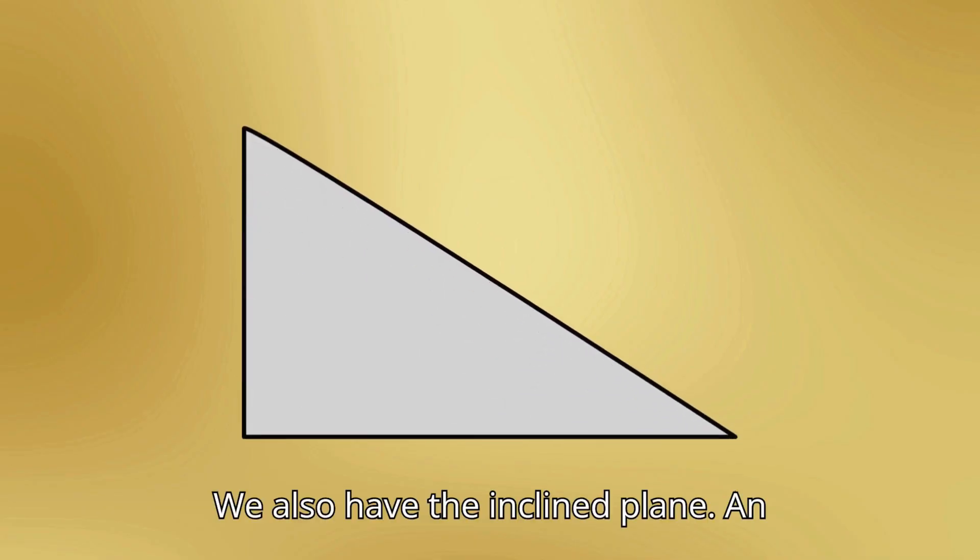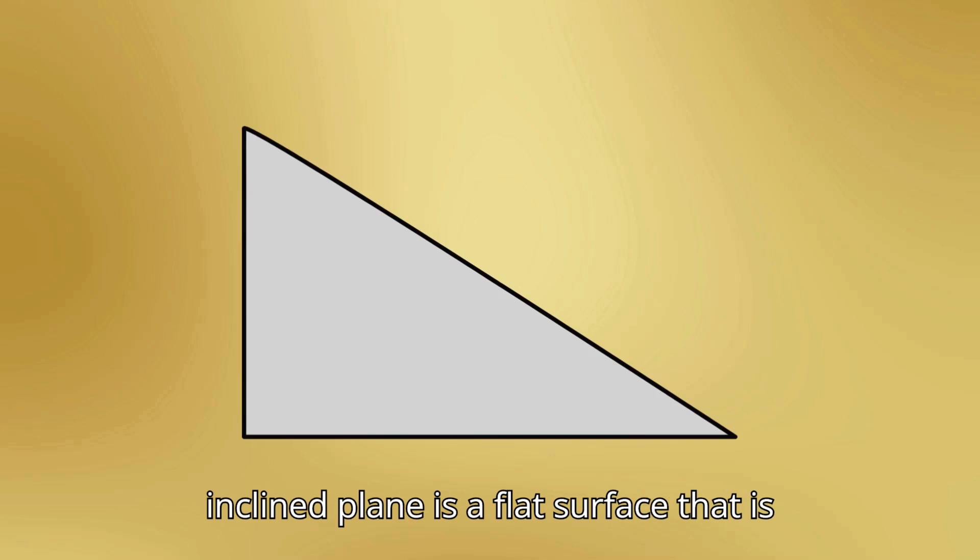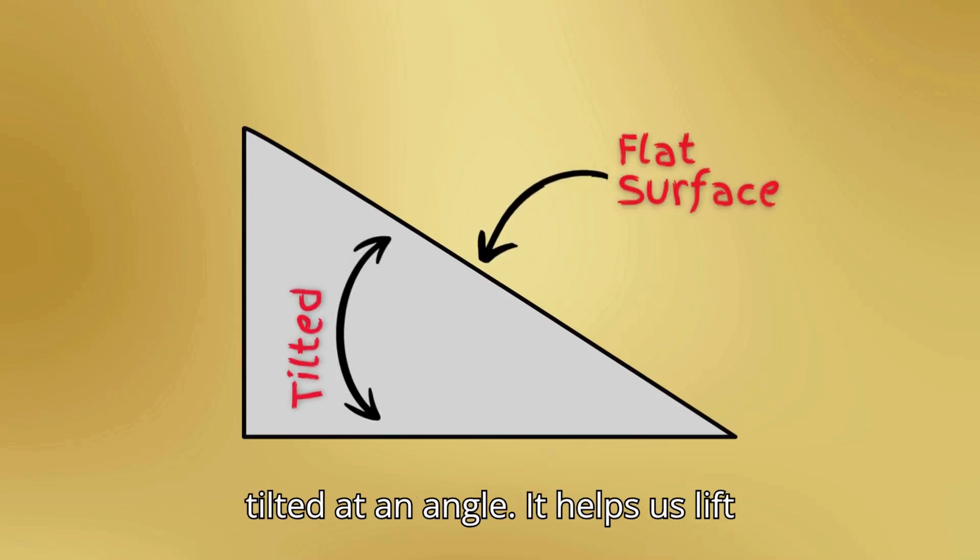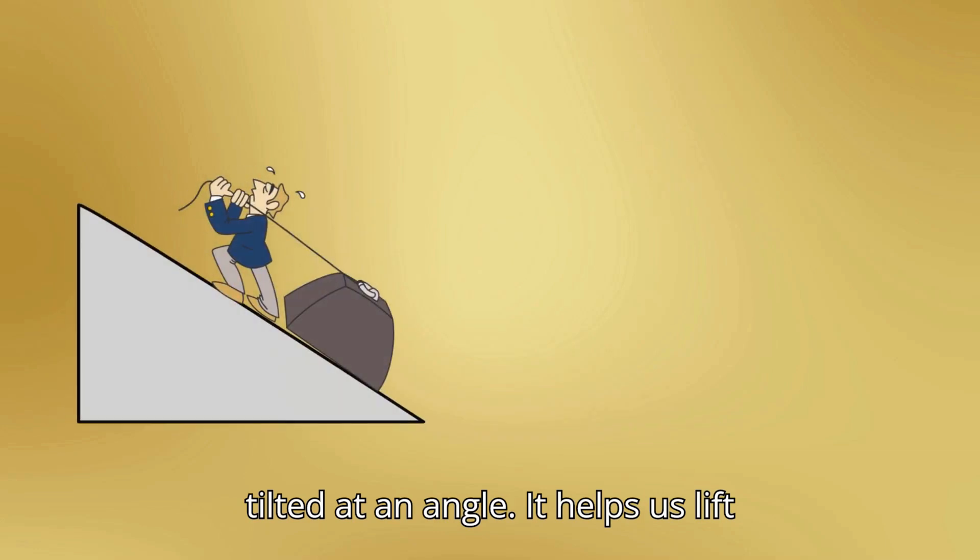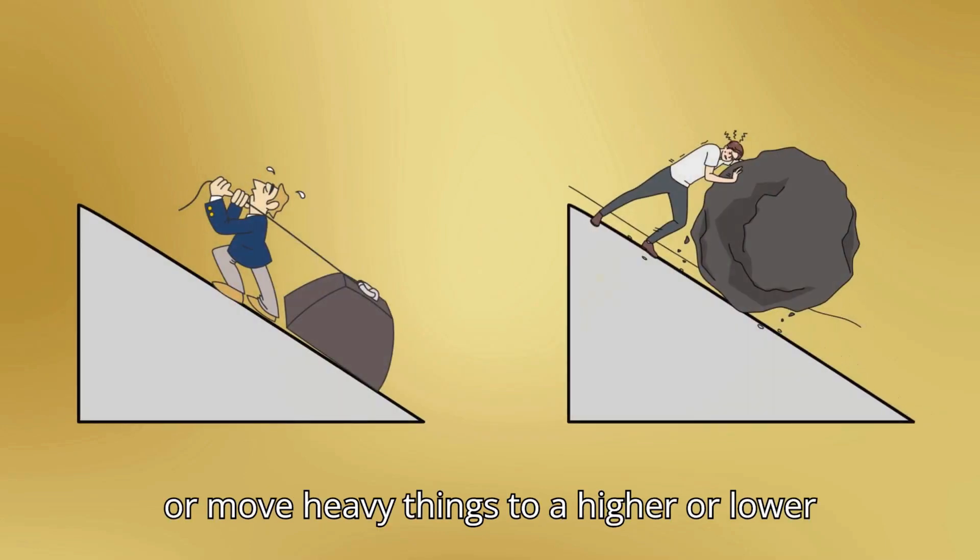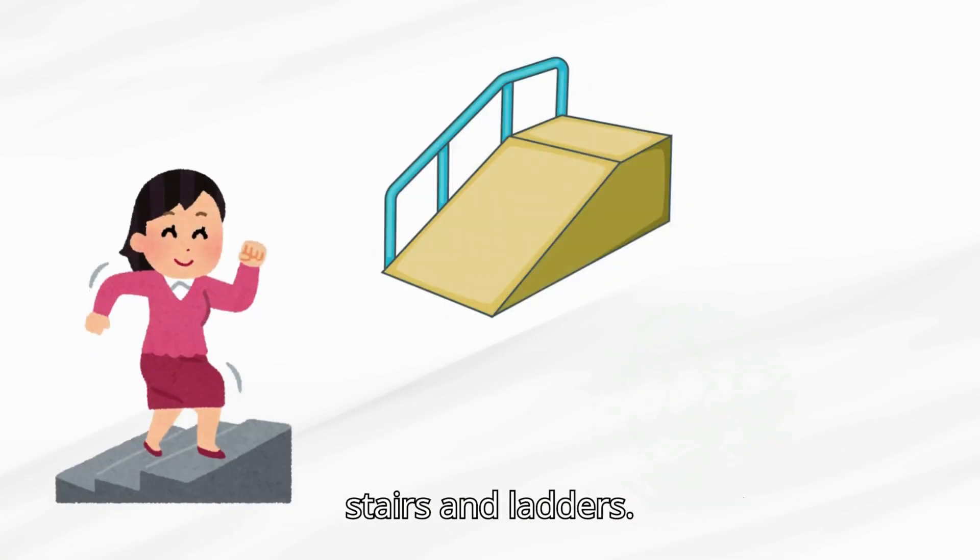We also have the inclined plane. An inclined plane is a flat surface that is tilted at an angle. It helps us lift or move heavy things to a higher or lower position. Examples include ramps, stairs, and ladders.